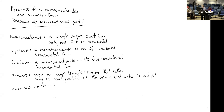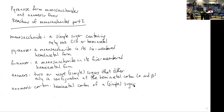The anomeric carbon is simply the hemiacetal carbon of a sugar. We're going to be talking mostly about simple sugars or monosaccharides, but the anomeric carbon is the hemiacetal carbon — it also used to be the carbonyl carbon in the open-chain form.